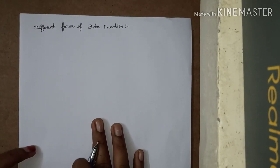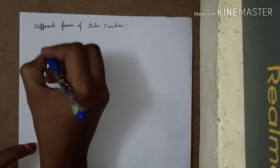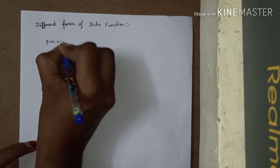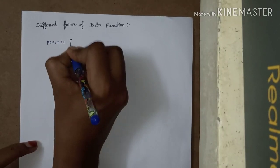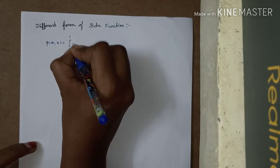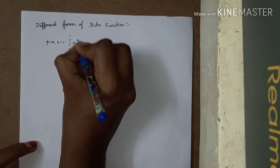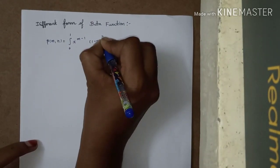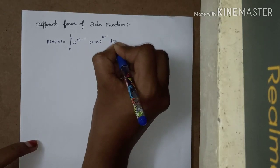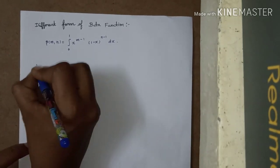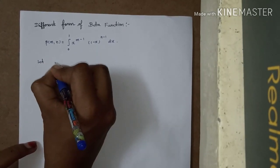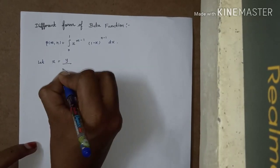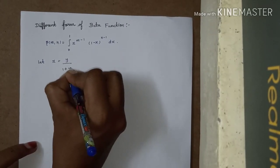The different form of the beta function: beta(m, n) equals the integral over 0 to 1 of x power m minus 1, times 1 minus x power n minus 1, dx. Let x equal to y divided by 1 plus y.